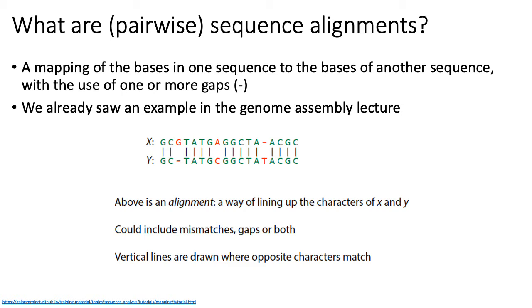Highlighted in red are either mismatches, such as between the A and the C in sequences X and Y, or gap characters. Gap characters are introduced when we think there's an indel at a particular position. For example, a G in sequence X and a dash in sequence Y represents an indel — either an insertion in sequence X at that position, or a deletion from sequence Y.